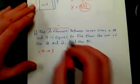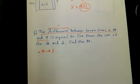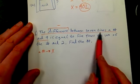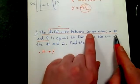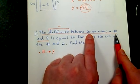That's what I want to write first. It's the difference between two numbers, so I'm going to subtract these. Between seven times a number - let's break it down. Seven times a number: how do I write seven times a number if we're calling the number X?